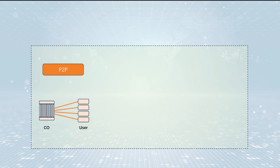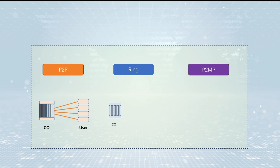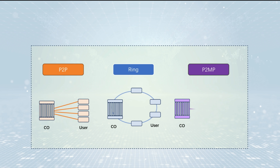Optical access networks (OAN) have typically been deployed using one of three different architectures: point-to-point (P2P), point-to-multipoint (P2MP), or ring. P2MP, based on PON technology, is widely used by telecom operators.